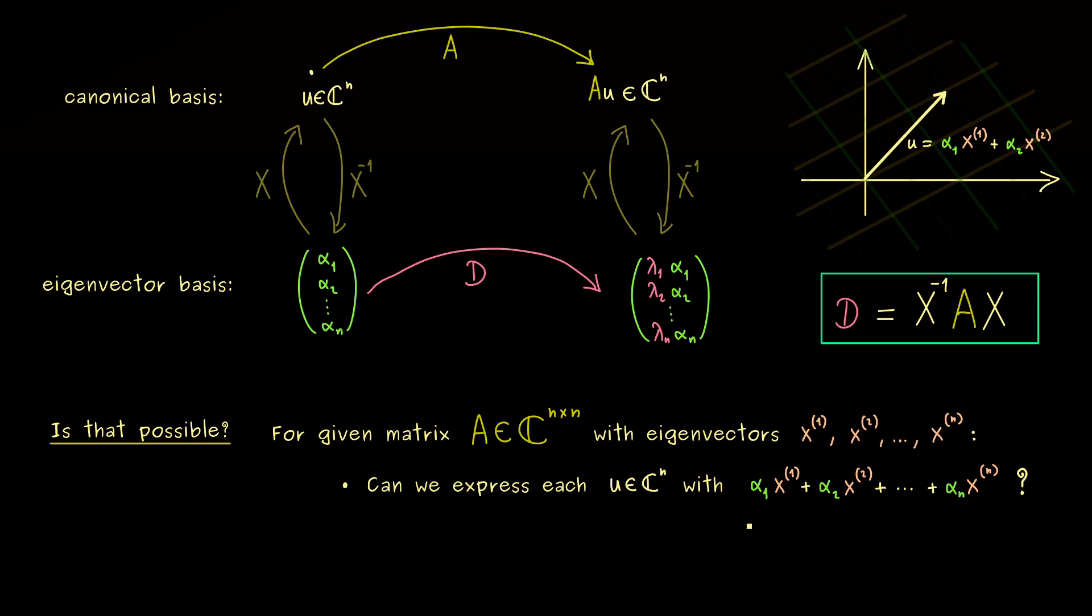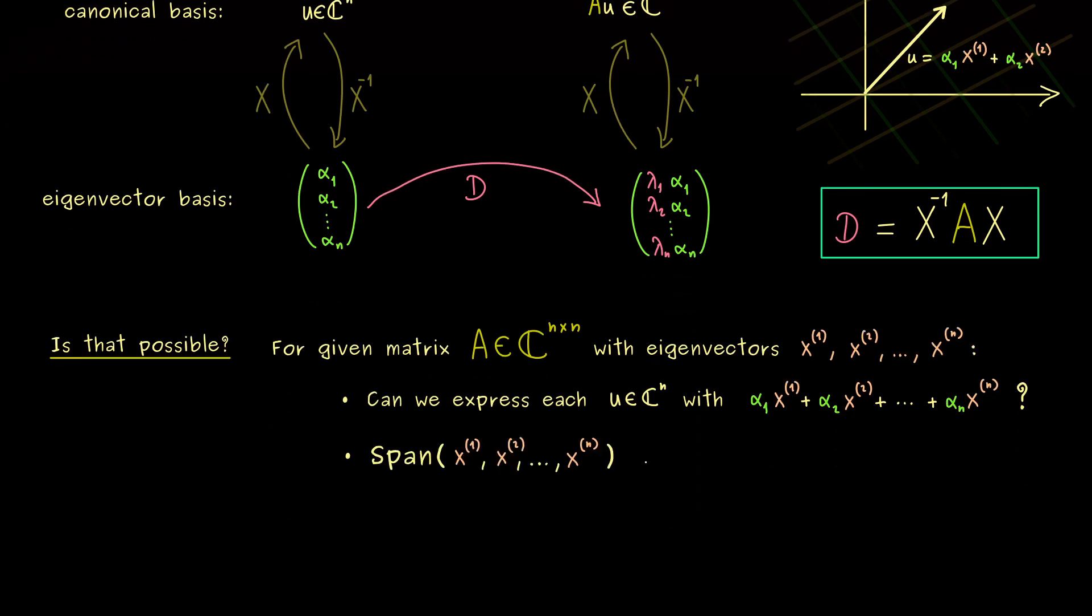Hence, what we actually want here is that the eigenvectors of A span the whole C^n. So we can reformulate this question in a shorter way.